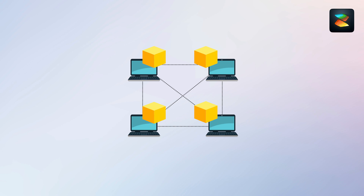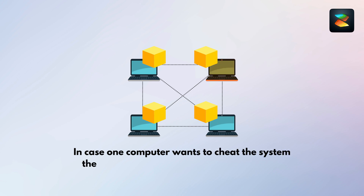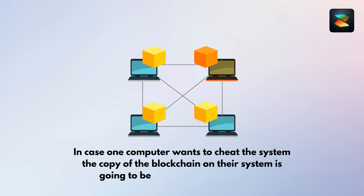In terms of security, every time a new transaction is introduced, all the computer systems are distributed an updated copy of the blockchain. So if one computer wants to cheat the system, the copy of the blockchain on their system is going to be different from all others, and that tells us exactly where the fault lies. That's one of the very important things that make a blockchain secure.